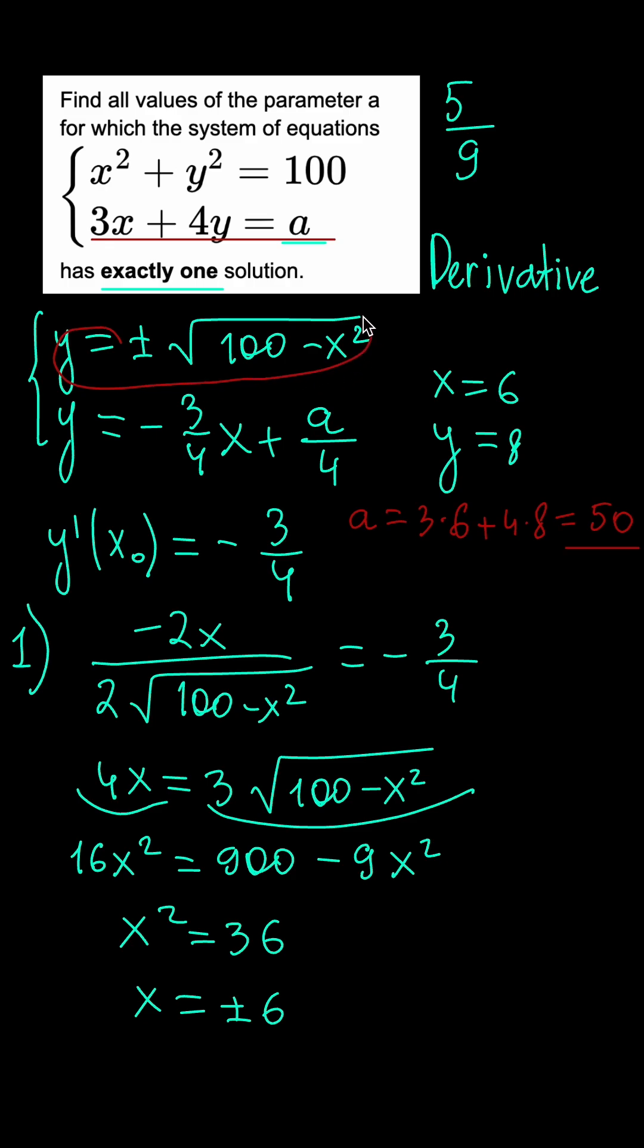And if we do the same for the second function y equals minus square root, then we're going to have a plus here, a minus here, which means that x equals minus 6 is the root. And for that case we would have a equals minus 50.